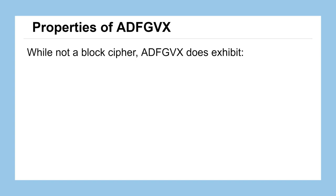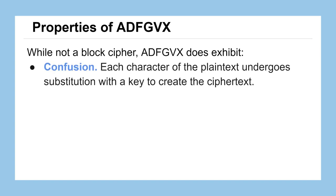Again, this is not a block cipher, but it does exhibit confusion. Each character of our plaintext when we use the cipher will undergo substitution using a key to help us create the ciphertext. That's nothing new — we've seen confusion all along in this course; it's only been recently that we started calling it that.